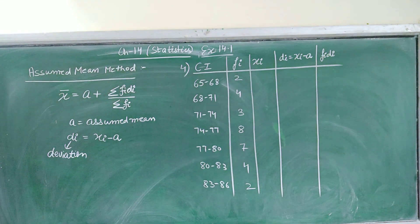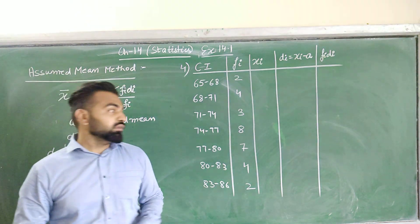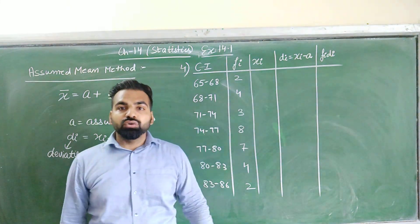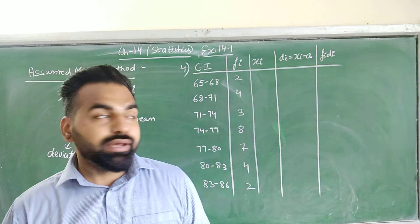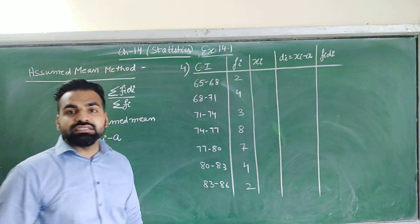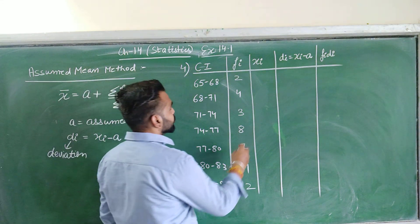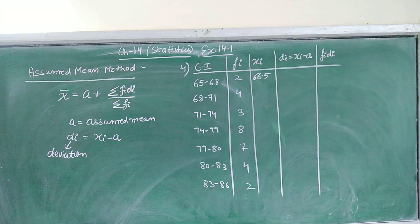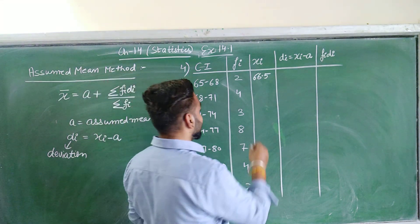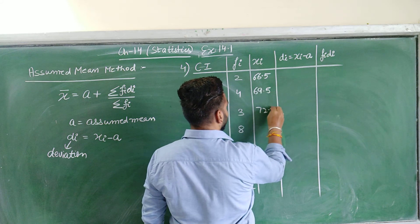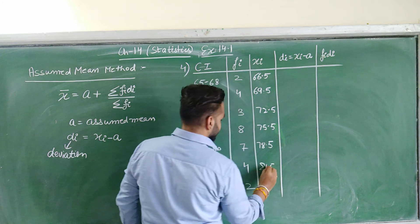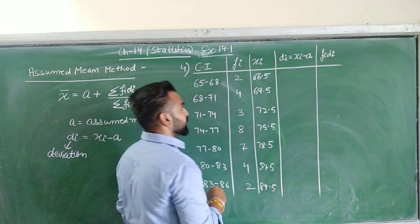Let us see question number 4 of exercise 14.1. We will find the mean by the assumed mean method. The first step is to find the class mark, that is xᵢ, calculated as (lower limit + upper limit) / 2. So the class marks are: 66.5, 69.5, 72.5, 75.5, 78.5, 81.5, and 84.5.